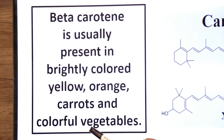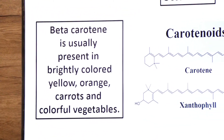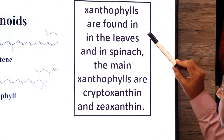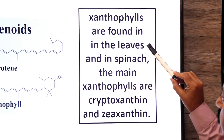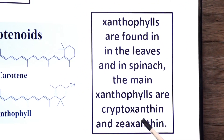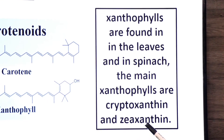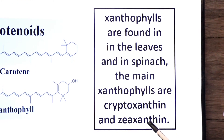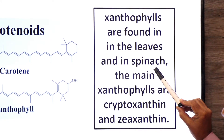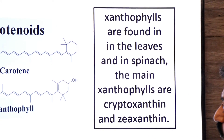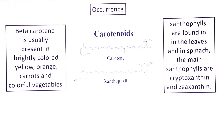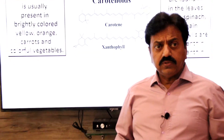Xanthophylls are found in leaves and in spinach. The main xanthophylls are cryptoxanthin and zeaxanthin, both of which are found in leaves and in spinach.